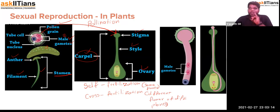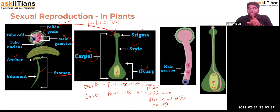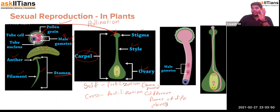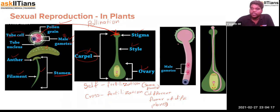Pollination is carried out by several agents: wind, water, animals, birds, and insects — and they are named based on these different agents. The stigma consists of a sticky, nutritious substance, so the pollen grain gets stuck on it. Due to the high concentration of dissolved substances in the pollen grain, water from the stigma enters the pollen grain by endosmosis — the same osmosis process studied in the chapter on fundamental units of life. This results in the protrusion of the tube cell.